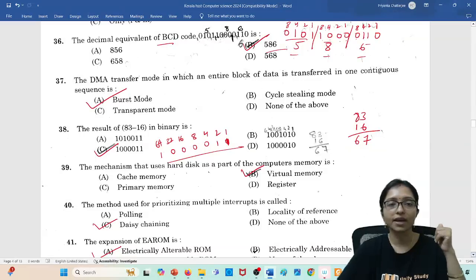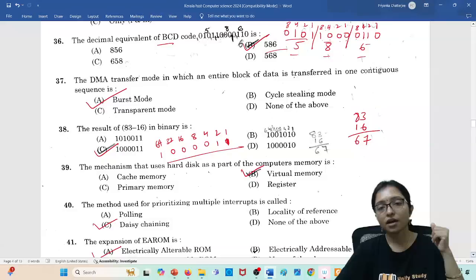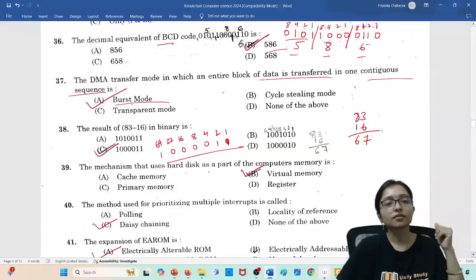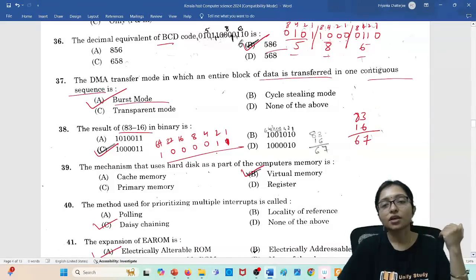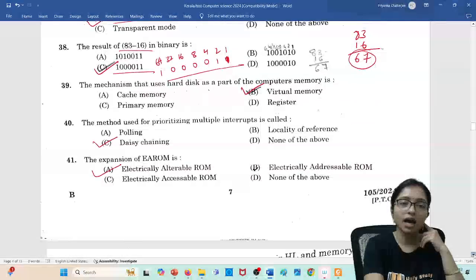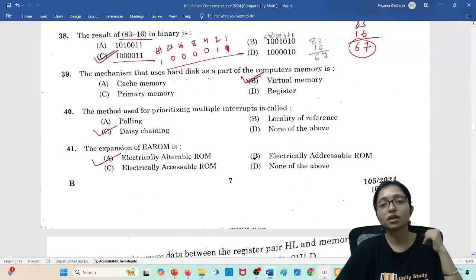The BCD code 4444, you can divide, so it is 586. So answer is 586. DMA transfer where the block of data transfers in contiguous sequence, that is burst mode. Result of 83 minus 16: simple question, you are getting 67. So 67 is this one, this is your correct answer.